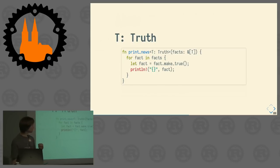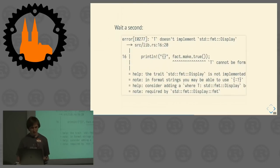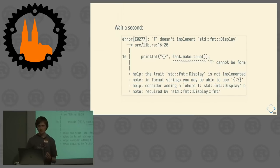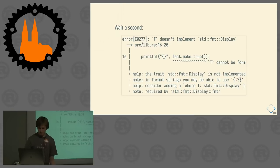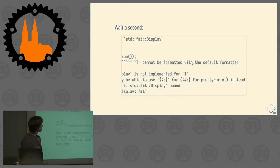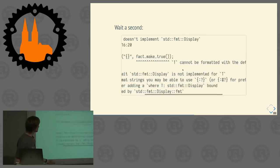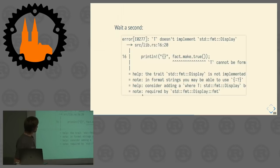But actually, this does not compile, because we are not only making facts true — we are also printing them. And the Rust compiler tells us: T does not implement `std::fmt::Display`. The error message is quite explicit: T cannot be formatted with a default formatter. The trait Display is not implemented, and it is required by the `format!` macro, which the `print!` macro calls internally.